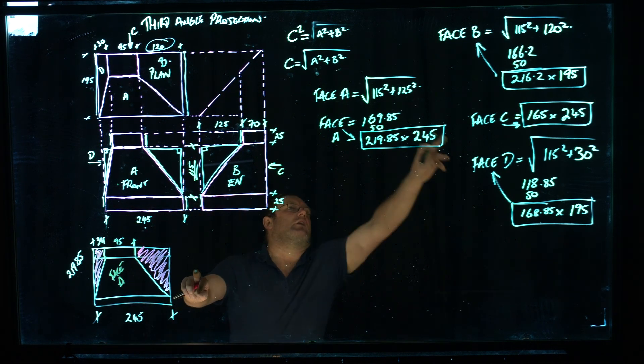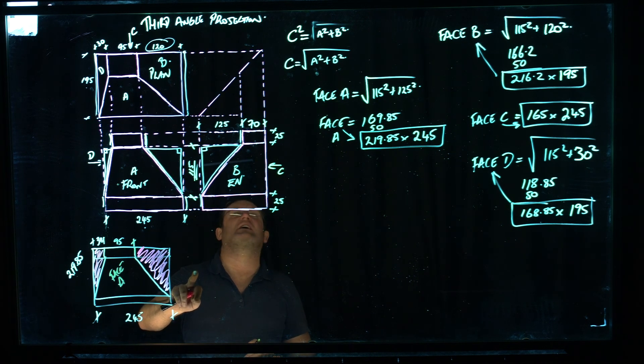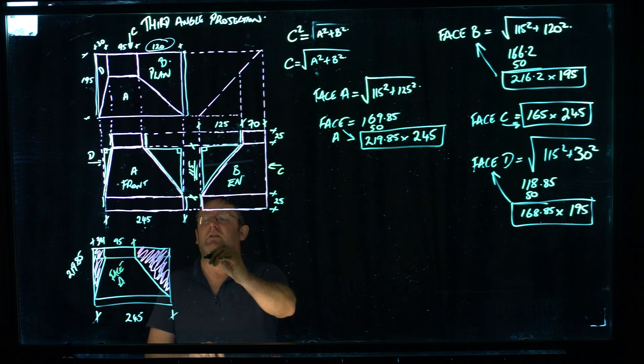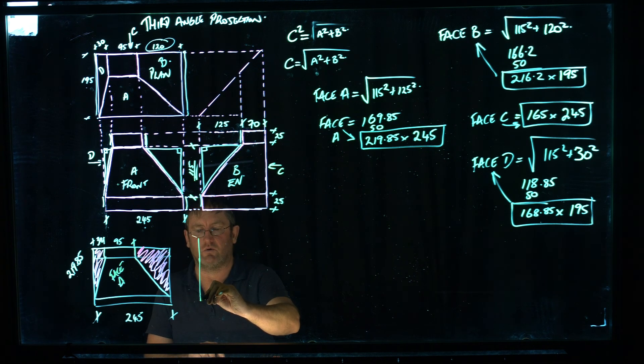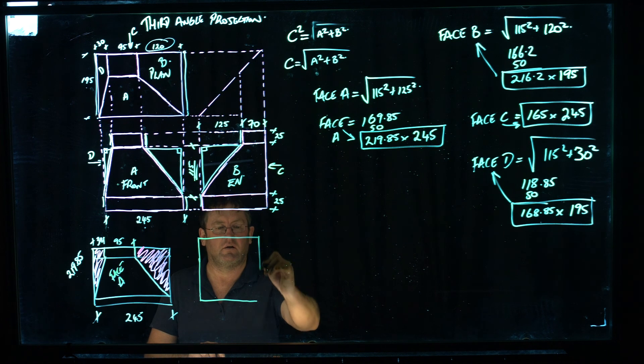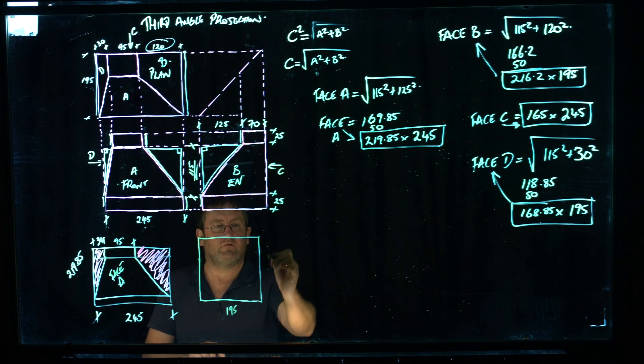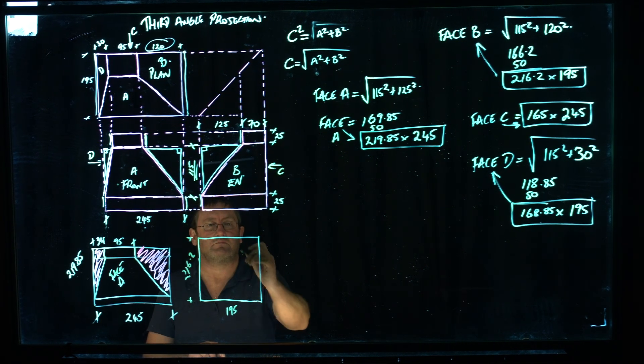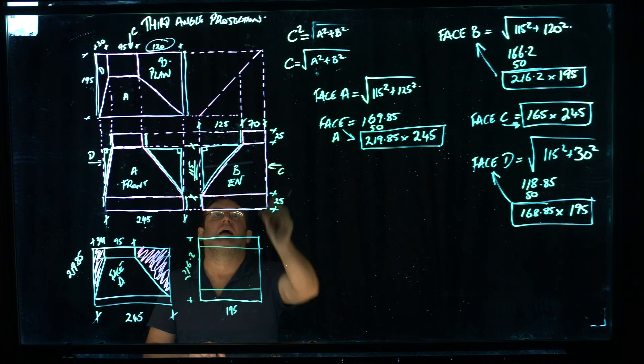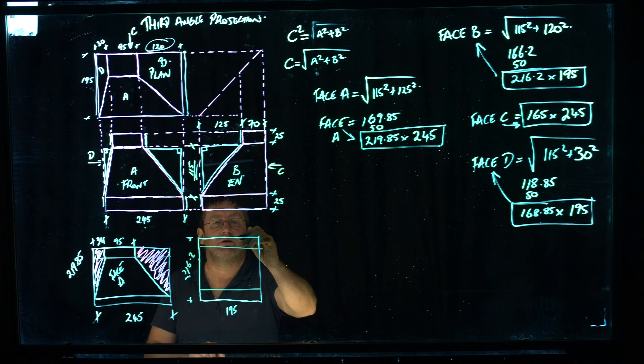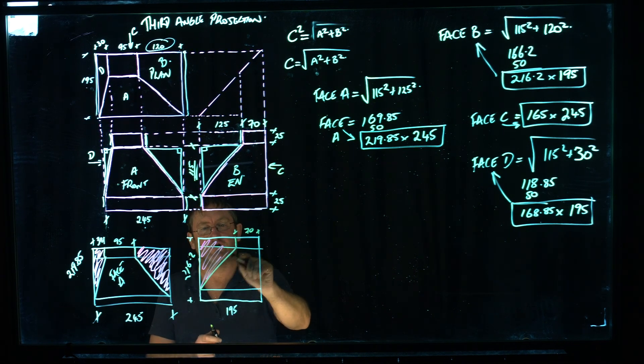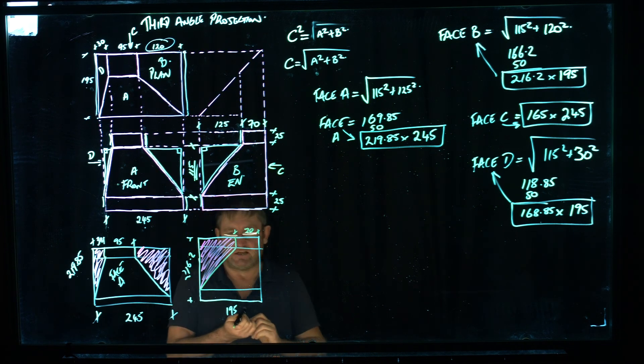Face B. Right up the top there. We've got 216 by 195. So it's 195 that way. So it's slightly long. I'll just draw it in here. It's 195 wide. So it's 195, it's 216.2. It's got 25mm straight on the top and bottom. And it's 70mm at this point. So we've got a 70mm line coming in from the side there. And that's our line across there. So this is the portion here that you're going to chop off once again. So that's face B.